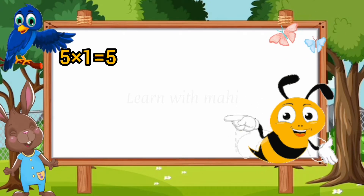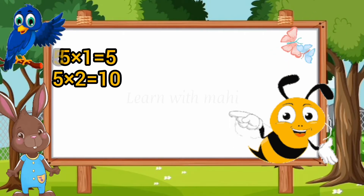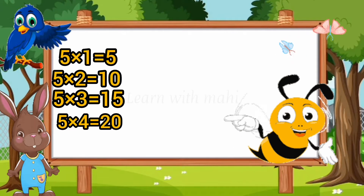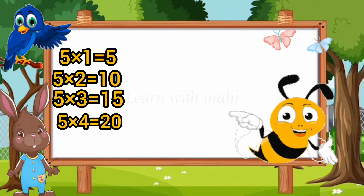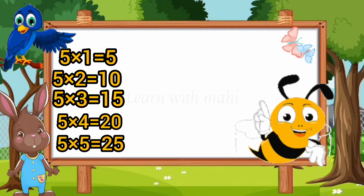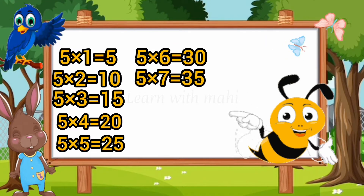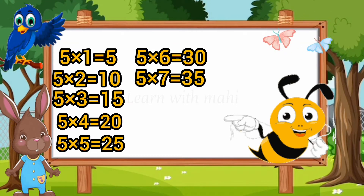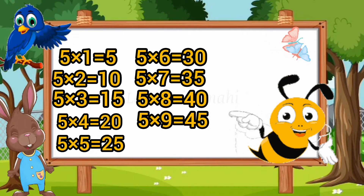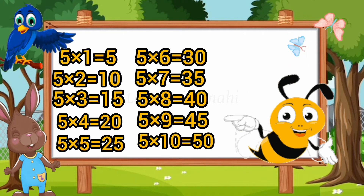5 ones are 5. 5 twos are 10. 5 threes are 15. 5 fours are 20. 5 fives are 25. 5 sixes are 30. 5 sevens are 35. 5 eights are 40. 5 nines are 45. 5 tens are 50.